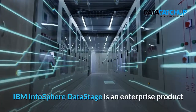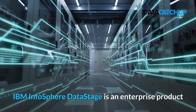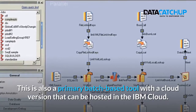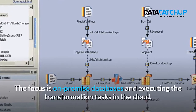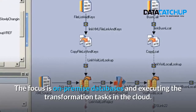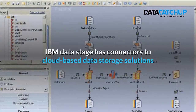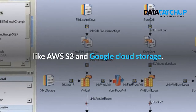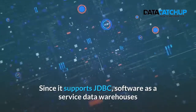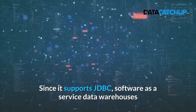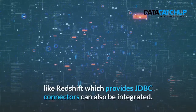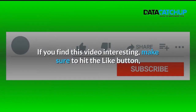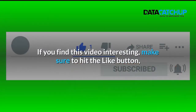Three, IBM Infosphere DataStage. IBM Infosphere DataStage is an enterprise product aimed at bigger organizations with legacy data systems. This is also a primary batch-based tool with a cloud version that can be hosted in the IBM cloud. The focus is on on-premise databases and executing the transformation tasks in the cloud. IBM DataStage has connectors to cloud-based data storage solutions like AWS S3 and Google Cloud Storage. Since it supports JDBC, software as a service data warehouses like Redshift, which provides JDBC connectors, can also be integrated.